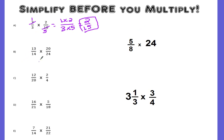Look at example B: 13 over 14 times 20 over 24. Can I cross simplify with the 13 and the 24? No, there are no common factors. However, there are common factors with the 14 and the 20 — I could divide both by 2. So 14 divided by 2 leaves me 7, and 20 divided by 2 will leave me a 10.